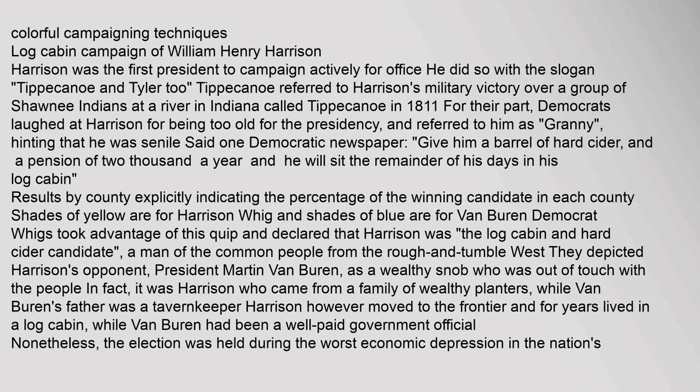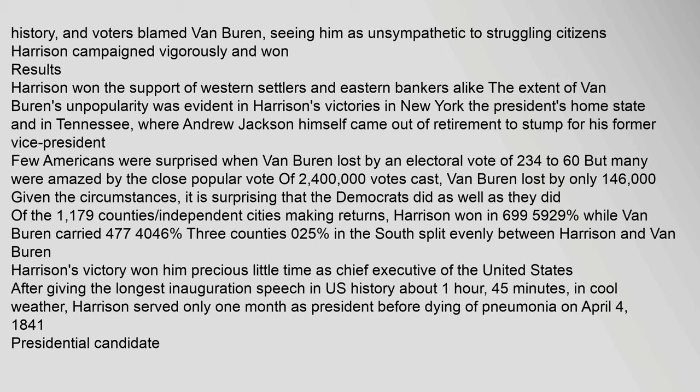Results by county show the percentage of the winning candidate: shades of yellow are for Harrison (Whig) and shades of blue for Van Buren (Democrat). The Whigs took advantage of Democratic quips and declared that Harrison was 'the log cabin and hard cider candidate, a man of the common people from the rough and tumble west.' They depicted Van Buren as a wealthy snob out of touch with the people. In fact, it was Harrison who came from a family of wealthy planters, while Van Buren's father was a tavernkeeper. Nonetheless, the election was held during the worst economic depression in the nation's history, and voters blamed Van Buren, seeing him as unsympathetic to struggling citizens. Harrison campaigned vigorously and won.